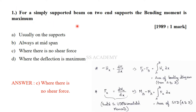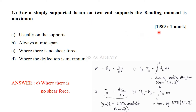For a simply supported beam on two supports, the bending moment is maximum usually at mid-span, where there is no shear force and where the deflection is maximum. They have asked the section where maximum bending moment occurs. This is a case of a simply supported beam, and this question was asked in the 1989 GATE exam for one mark.